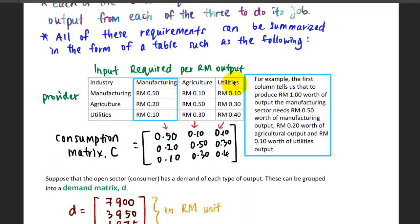For example, the first column tells us that to produce one ringgit worth of output from the manufacturing sector, you need to spend 50 cents worth of manufacturing output for the instruments or equipment. 20 cents will be paid to agriculture output, maybe in terms of food to feed your workers. And 10 cents will be spent on utilities, which means that when you're producing your equipment or instruments, you need to use electricity and water.